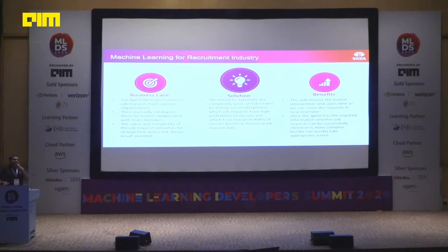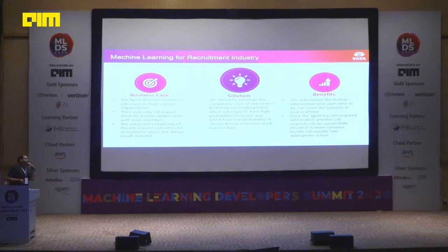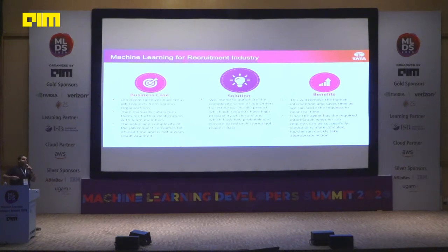It's not like the agent can pick any job request in a random fashion. They have to work with their teams and finalize which top job requests to work on, in hopes that those will generate more revenue compared to others. That revenue metric depends on how a job request brings in value or how complex it is. Our solution intends to automate the complexity score of these job orders, and it can be linked to the value of that job order, so the agent can decide — for example, a low complexity job order with a relatively high value should be taken up first.